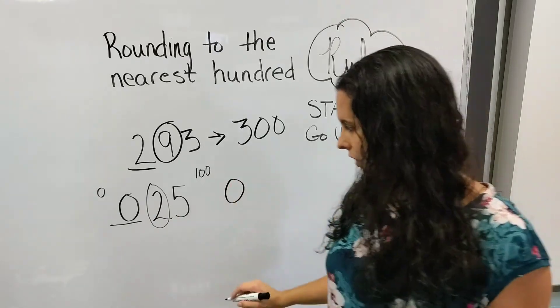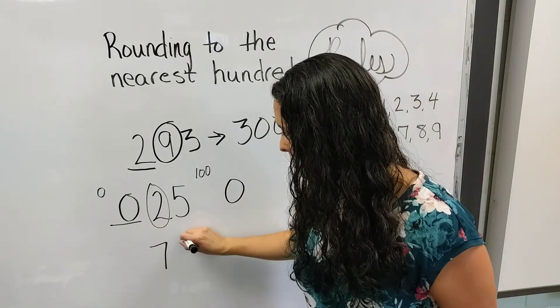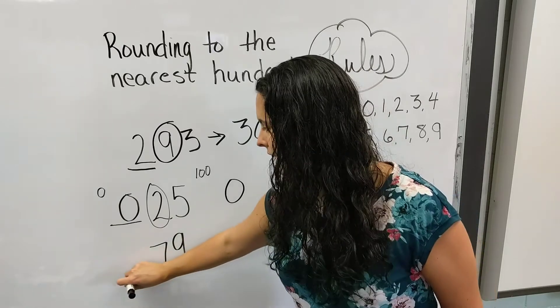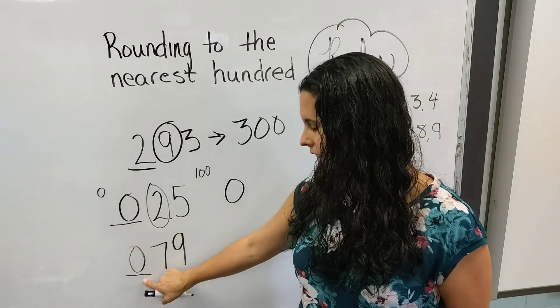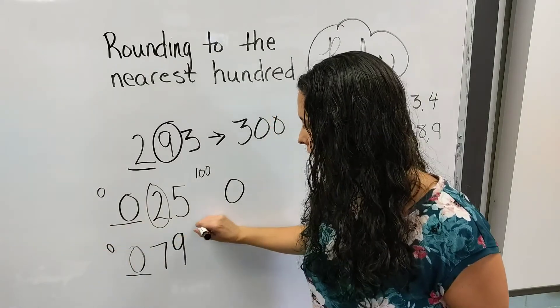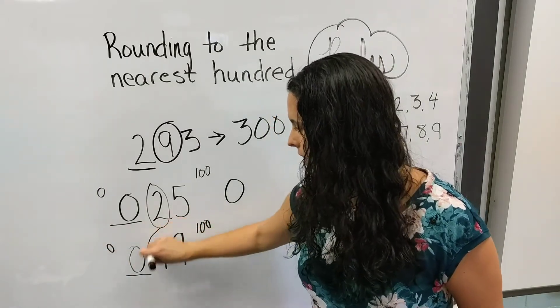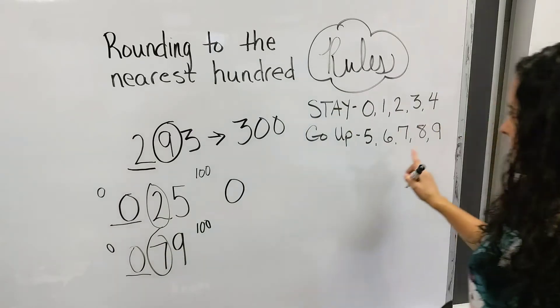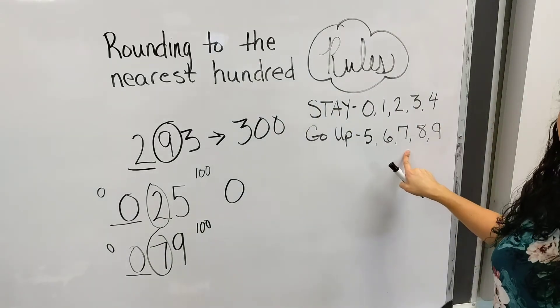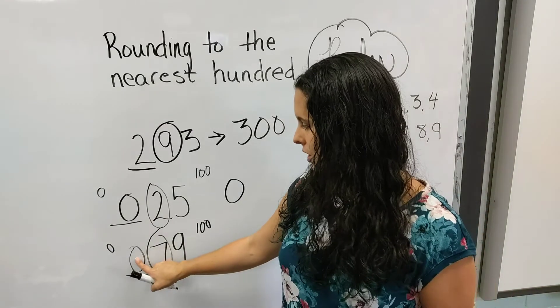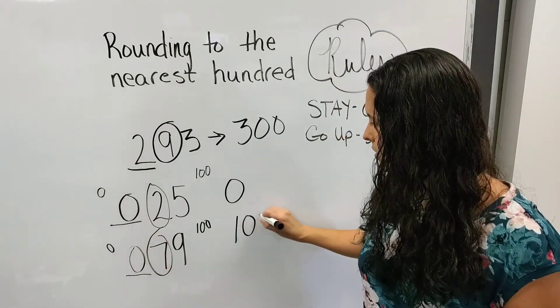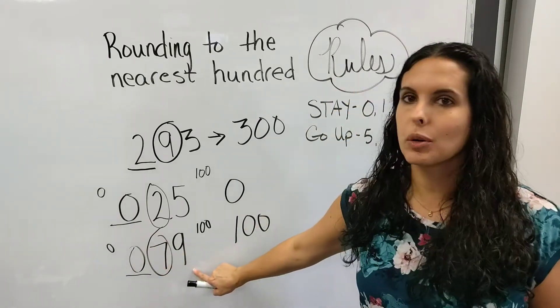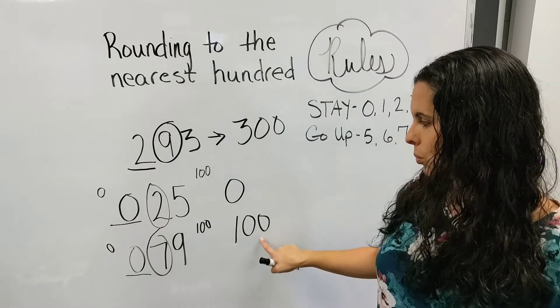Now, let's do another example, and let's pretend this number was 79, and I'm rounding to the nearest hundred. That's still a zero right there. It's between 0 and 100, but my bossy number is a 7, and 7 says go up. It's going to tell the zero to go up to a 1. These numbers go to zeros. So 79 on a number line is closer to 100.